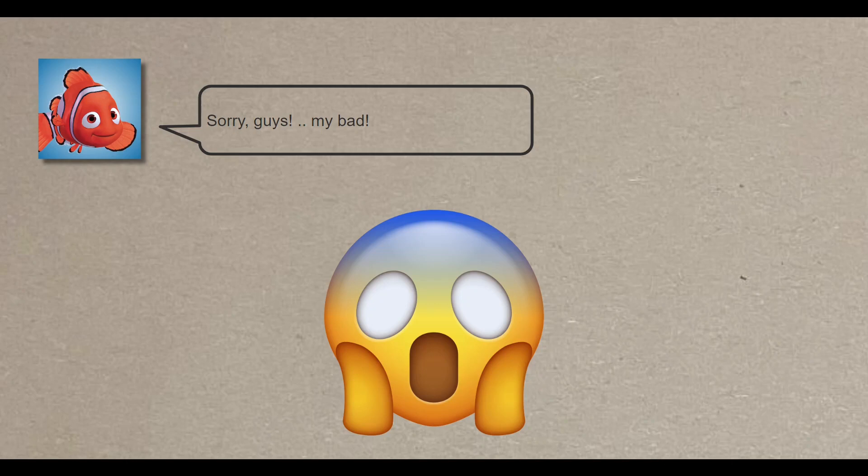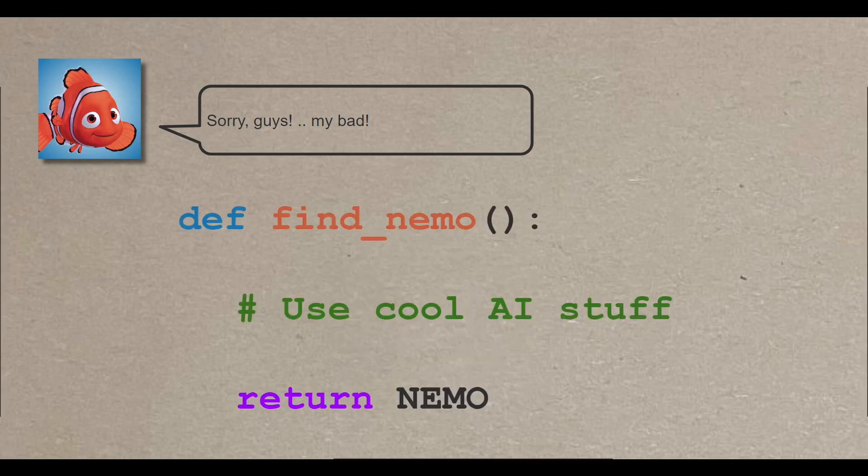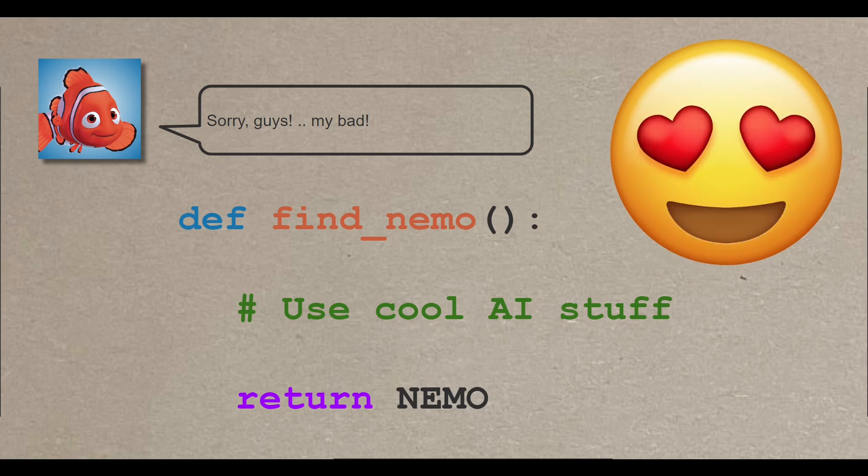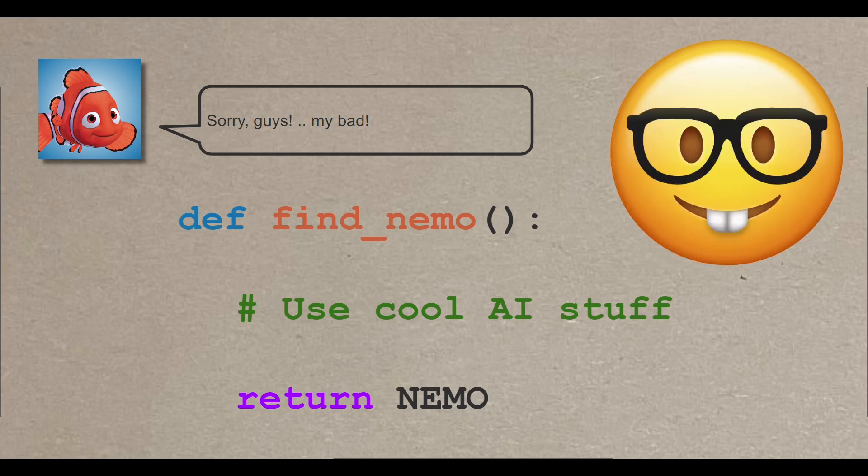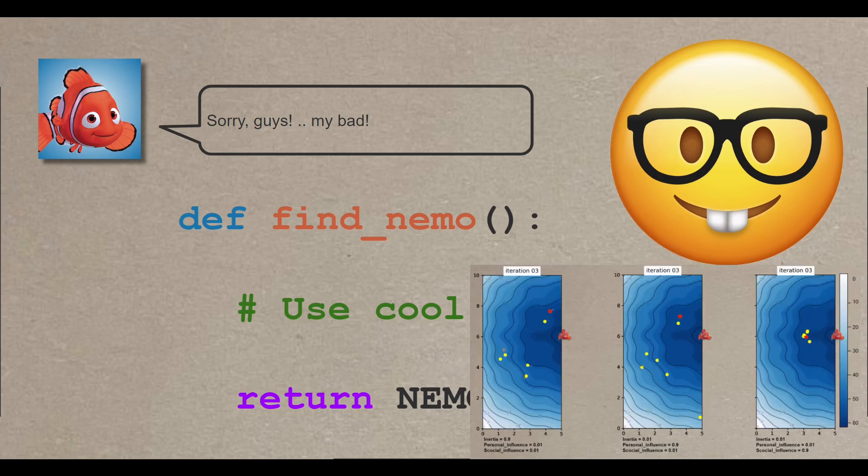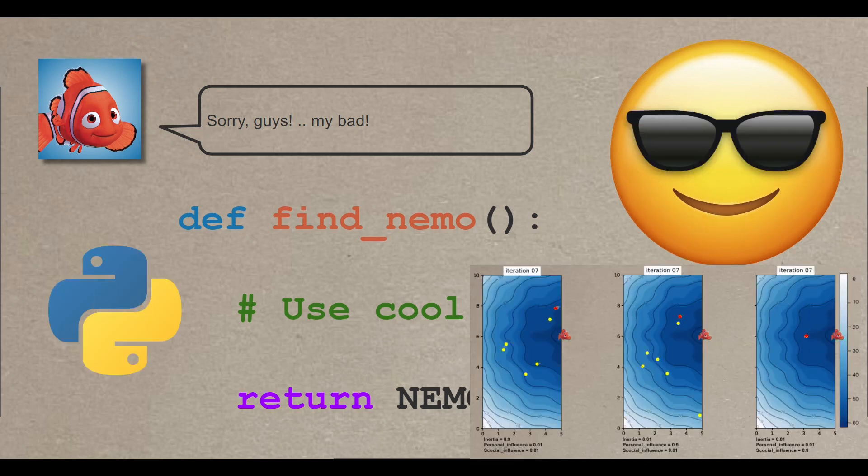Oh no! Nemo has gone missing again! This time, his friends are going to use nature-inspired artificial intelligence to find him. While they succeed, I'll visually explain all the steps they follow, and at the end of the video, I'll show you a computer simulation of the process and share a Python code of the entire procedure, so stay tuned.